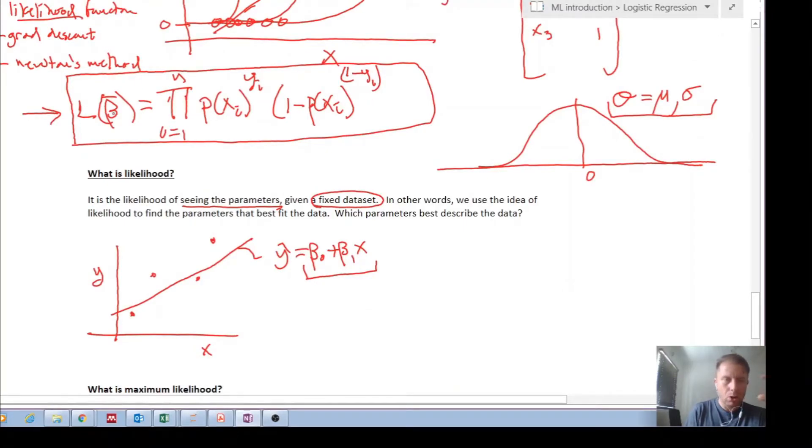all this is saying is for a given beta, set of betas, set of parameters, what is the likelihood that we will get this data set?